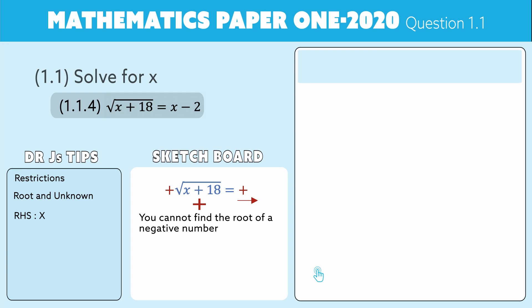Let's start with our restrictions. On the right-hand side, because there's an invisible plus in front of this root, this side has to be positive, which means it must be bigger than zero. So we say x minus 2 must be bigger or equal to zero. That means that x has to be bigger or equal to 2.